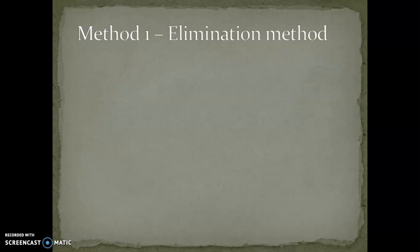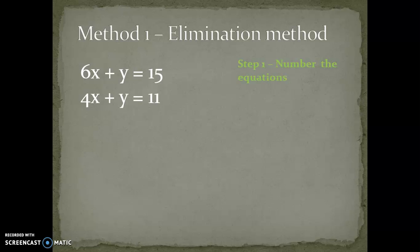Let's look into the first method, which is called the elimination method. Given here are two equations: 6x plus y equals 15, and 4x plus y equals 11. The very first step of this method is to number the equations. 6x plus y equals 15 is numbered as equation 1, and 4x plus y equals 11 is numbered as equation 2.